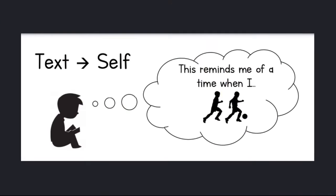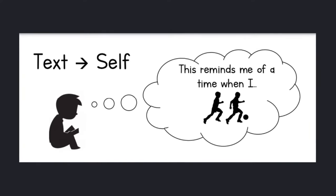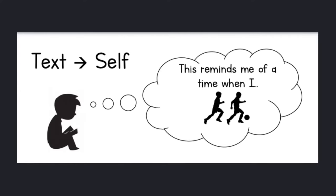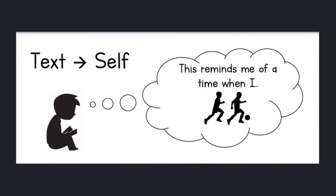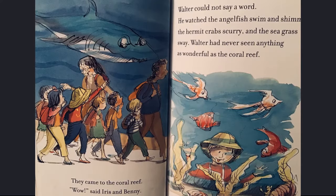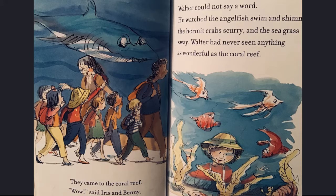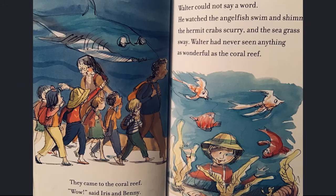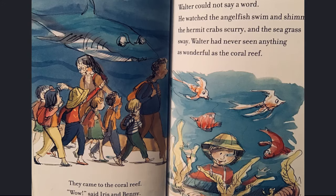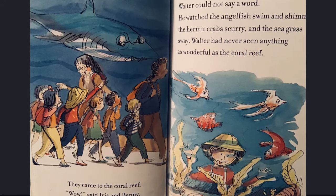Yesterday, you learned about text-to-self connections. When the characters or events in a story remind you of a personal experience, then you make a text-to-self connection. When I read the story Iris and Walter and the Field Trip, it reminded me of the time I went to the Shedd Aquarium and I saw the sharks. Just like Walter, I had never seen anything so wonderful before. This is an example of a text-to-self connection.